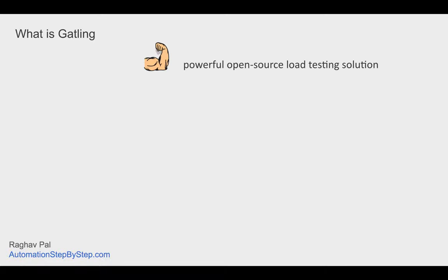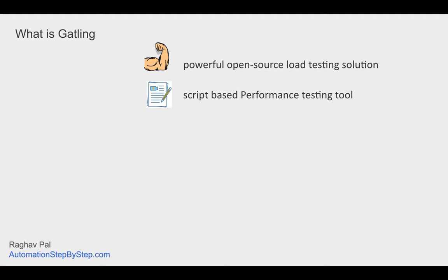Gatling is a powerful open source load testing solution. We say it is powerful because using Gatling you can create millions of virtual users on your system and you do not have to create a separate infrastructure or generate separate machines with high CPU and RAM. You can use your own systems to create millions of virtual users. I will tell you the concept behind this.